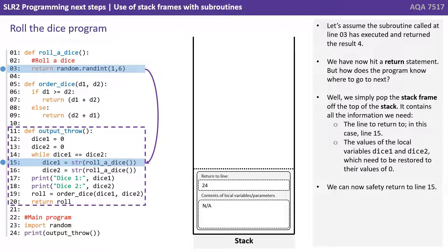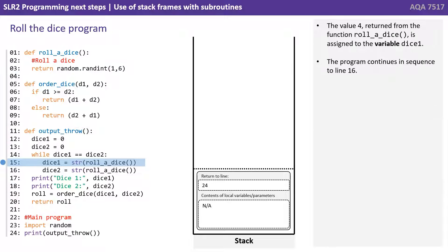The stack frame contains the line to return to — in this case line 15 — and the values of the local variables Dice1 and Dice2, which need to be restored to their values of 0. We can now safely return to line 15. The value 4 returned from the function Roll a Dice is assigned to the variable Dice1, and the program continues in sequence to line 16.